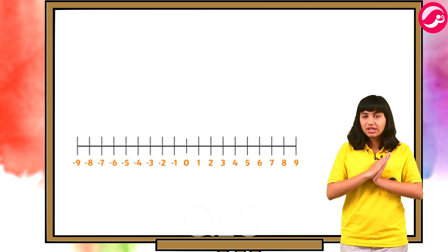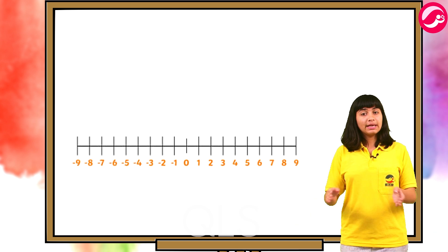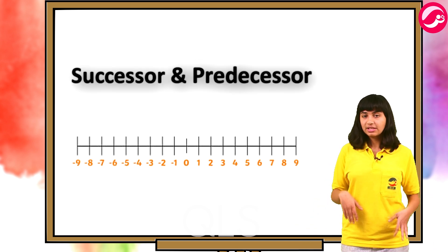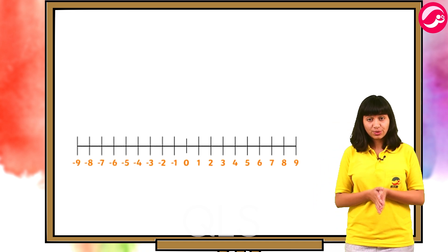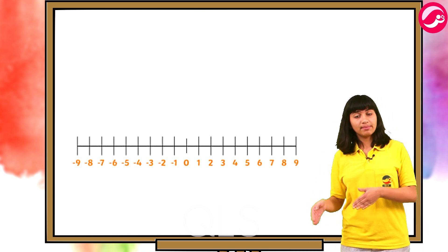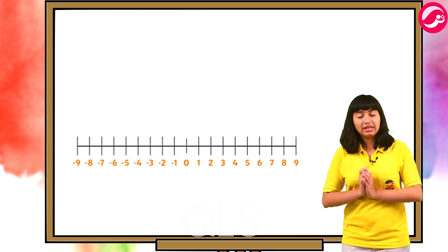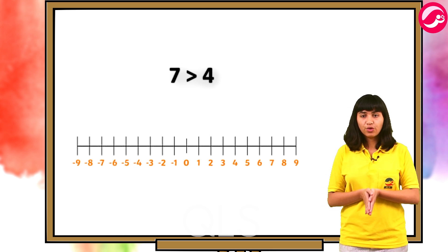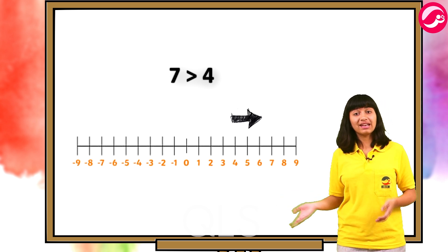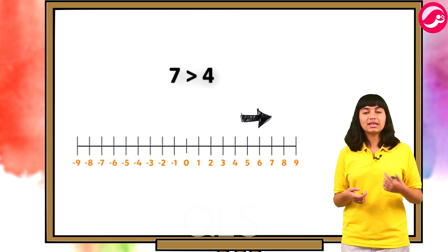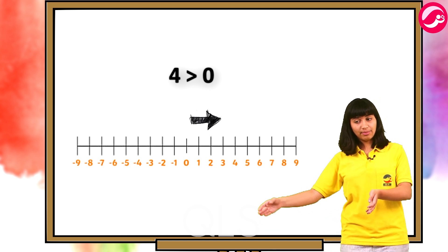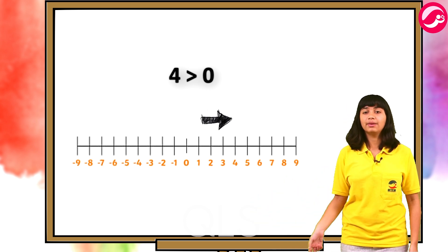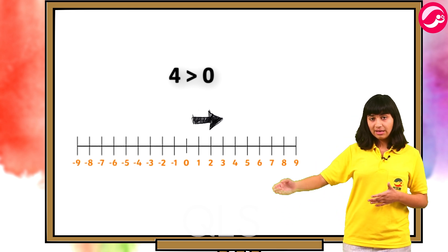Let us once again observe the integers represented on the number line. Successor aur predecessor kya hota hai — humne whole numbers wale chapter mein yeh padha tha. We know that seven is greater than four, and from the number line we observe that seven is to the right of four. Similarly, four is greater than zero because four is to the right of zero. Numbers jo right mein hote hain woh bade hote hain.